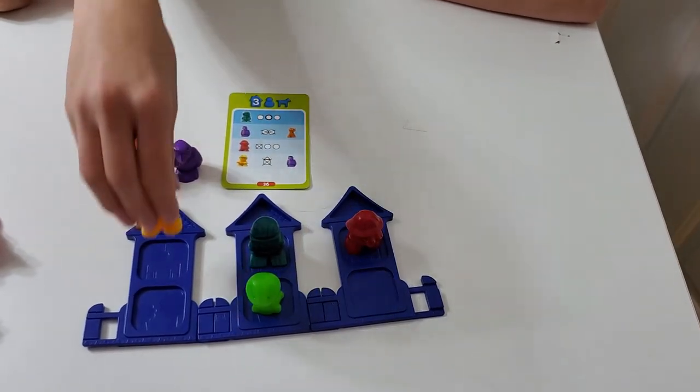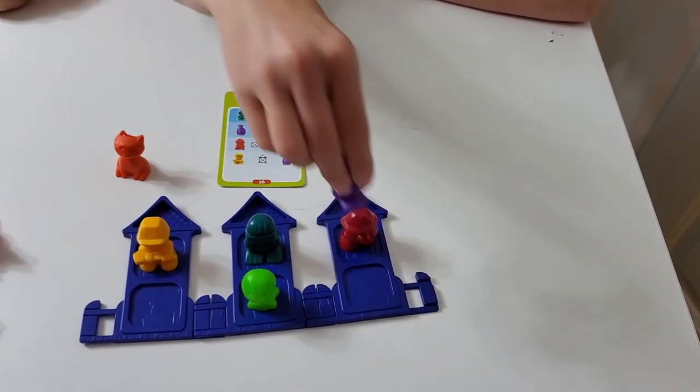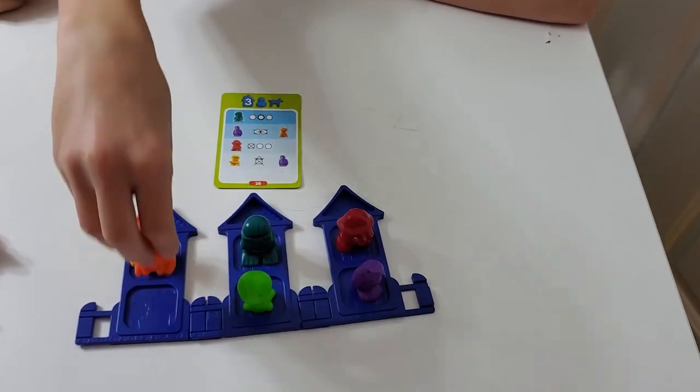Neither of these could be in the middle because they can't be neighbors. Red would have to go here, which means yellow goes here. The bird can't be in this house so it goes here, and the cat goes here.